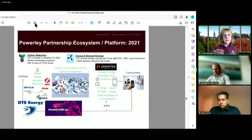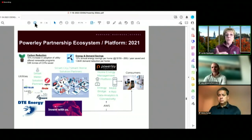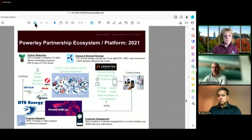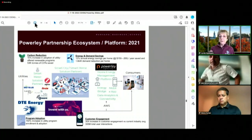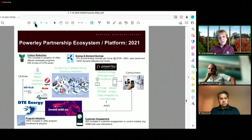Carbon reduction, 10% increase in adoption of utility offered renewable programs, 53 tons of CO2 saved. And so, these are some of what they're seeing now. Energy and demand savings, 12% annual energy savings per home at $150 to $200 per year saved. And 1.6 kilowatts demand reduction per home.